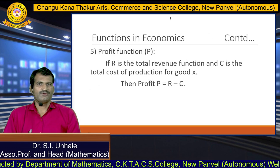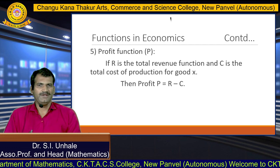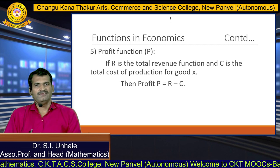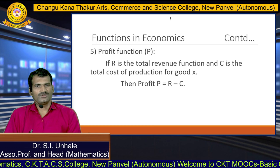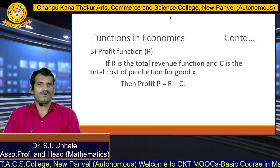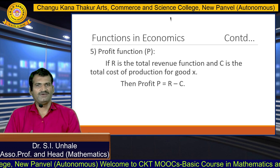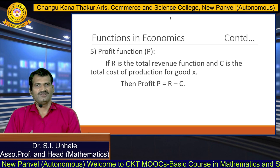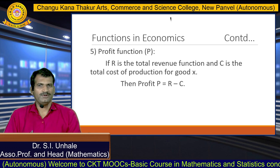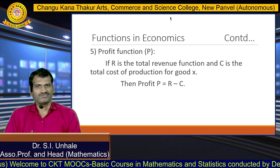The next function from economics is the profit function, denoted by P. We define it as follows: if R is the total revenue function and C is the total cost of production for goods, then we define the profit function as P equals R minus C.